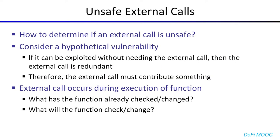So you might wonder, how exactly do we do that? Let's consider a hypothetical vulnerability. If this vulnerability is exploitable without needing the external call, then clearly the external call is redundant, so it's not worth talking about. Therefore, if the vulnerability needs the external call, the external call must be contributing something to the exploit — and the only thing it can contribute is its vantage point in the middle of function execution. When the external call occurs, the function being executed has already checked or changed some state variables, and will proceed to check or change more. It's these state variables that you are able to manipulate in order to break the application in unexpected ways.